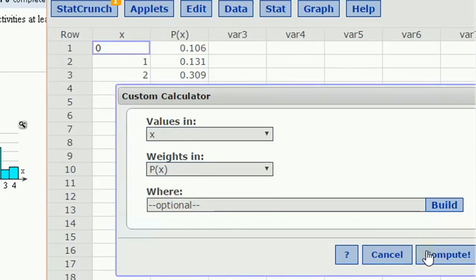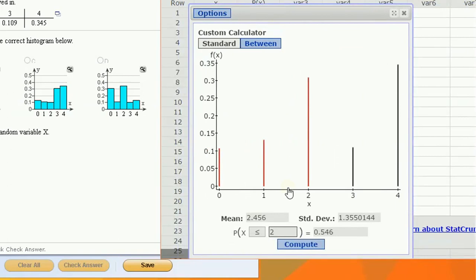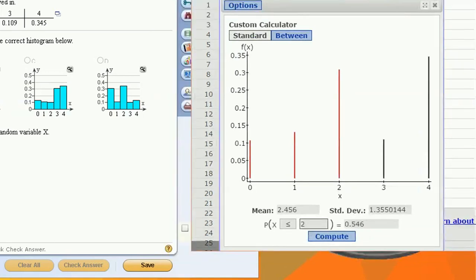And hit compute, we're going to get a very similar chart, but this is going to give us some ability to do some probability calculation. So this actually gives us the mean and the standard deviation of this probability distribution. And that's exactly what we're asked for.